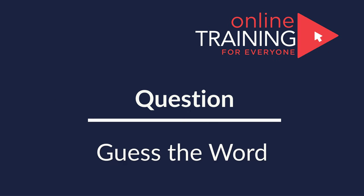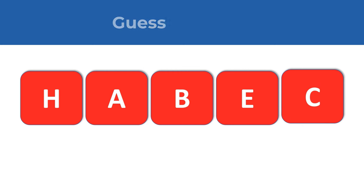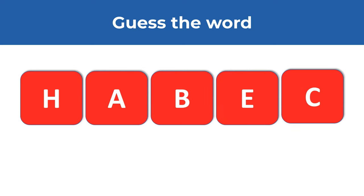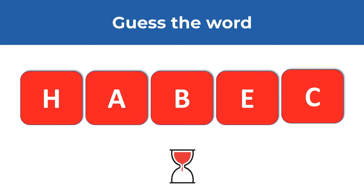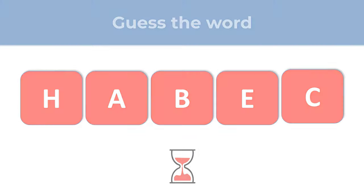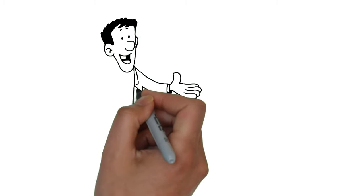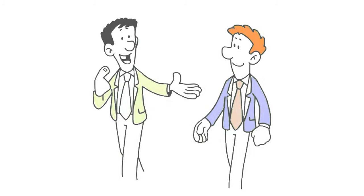Here's an interesting question from the recent test. You need to figure out the word from five letters you see on the screen. The letters are H, A, B, E, and C. Give yourself 10 to 15 seconds — maybe pause this video. Make sure to use all the letters, and use each letter only once.